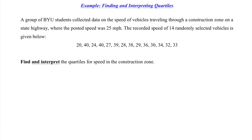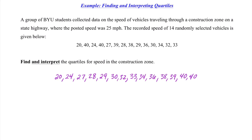Let's jump into our example. A group of BYU students collected data on the speed of vehicles traveling through a construction zone on a state highway where the posted speed was 25 miles an hour. The recorded speed of 14 randomly selected vehicles is given, and we're asked to find and interpret the quartiles. Step one is to organize the data in ascending order. We have 14 vehicles, so with an even amount of data, we take the mean of the two middle values: 32 plus 33 divided by 2 gives us a median of 32.5.